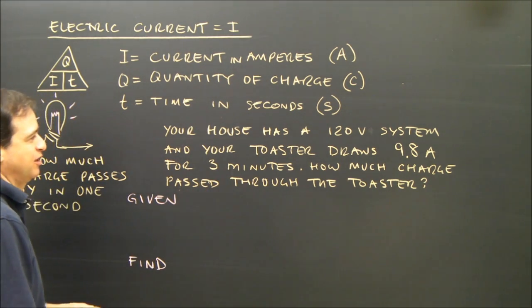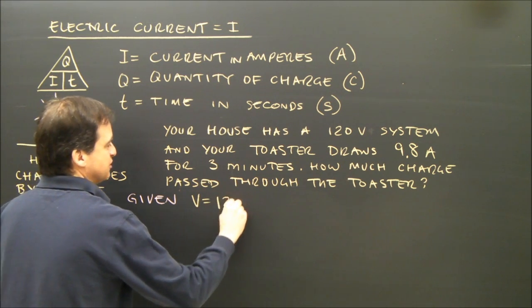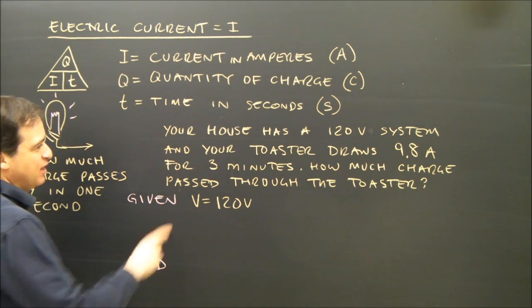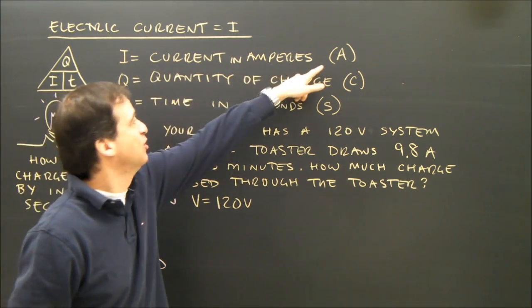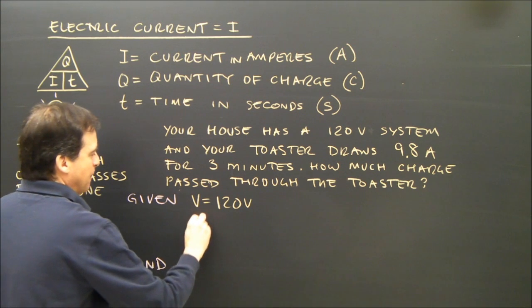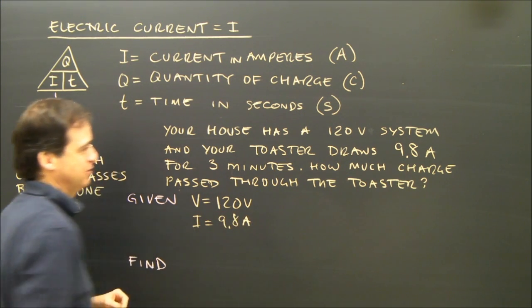So first we write down our given. Our given is we know the voltage, or potential difference, is 120. It draws 9.8 amperes. I know amperes is the unit for current. So I didn't use the word current in there, but I know current equals 9.8 amperes.